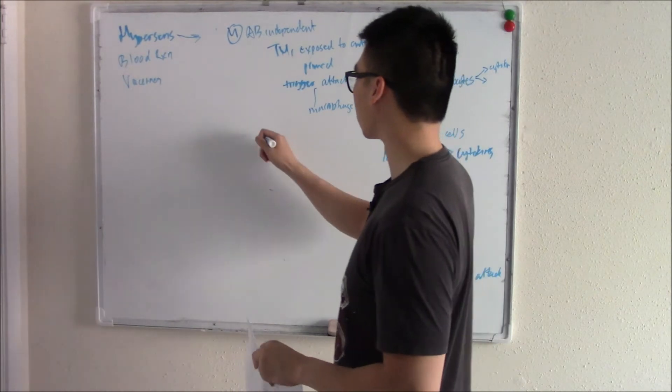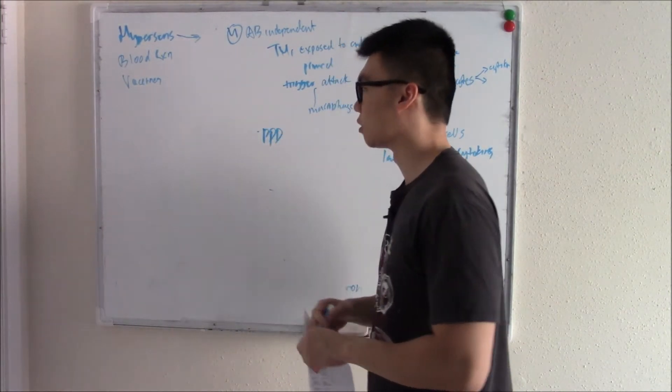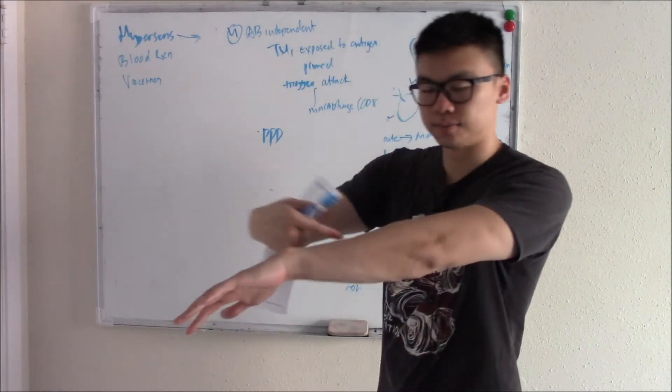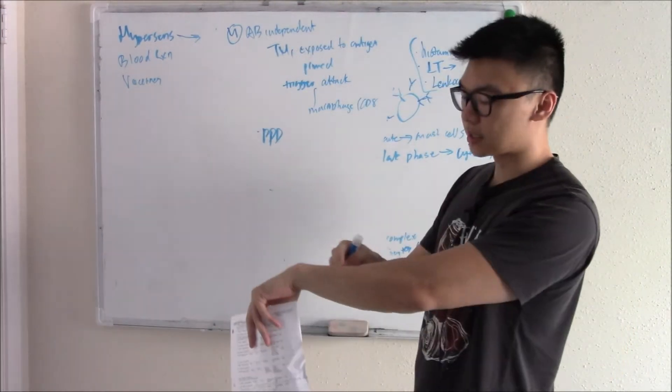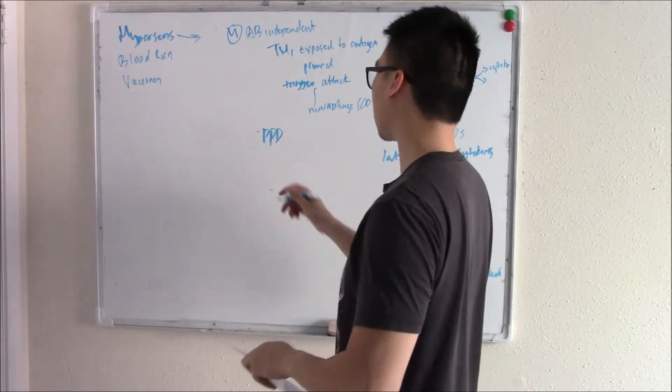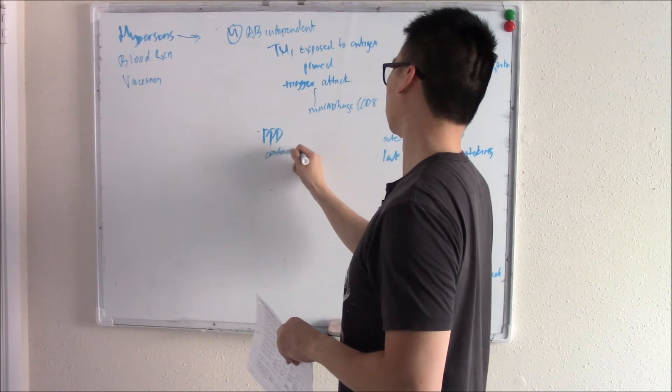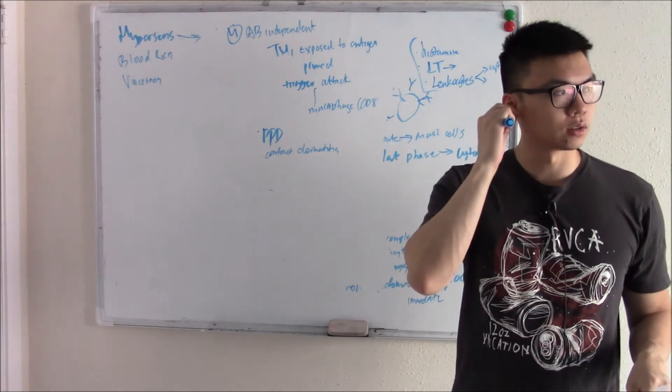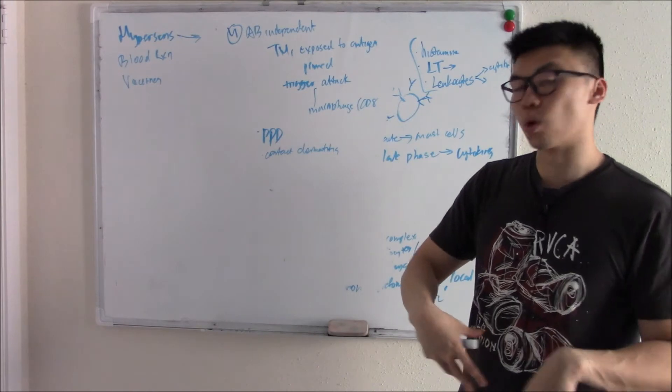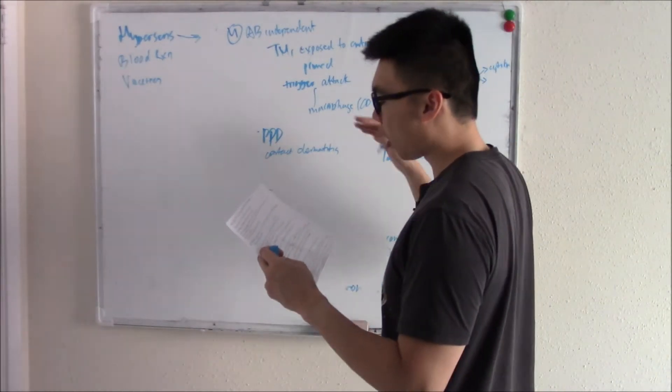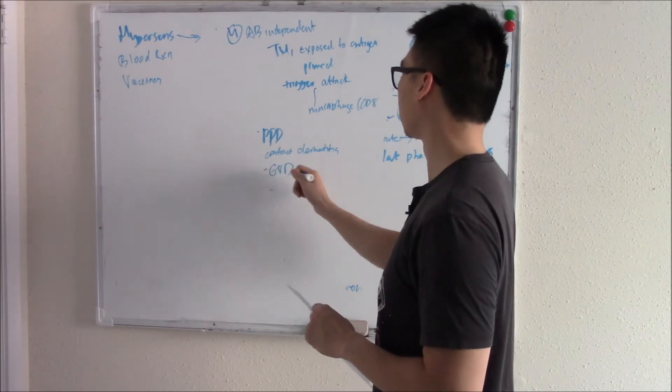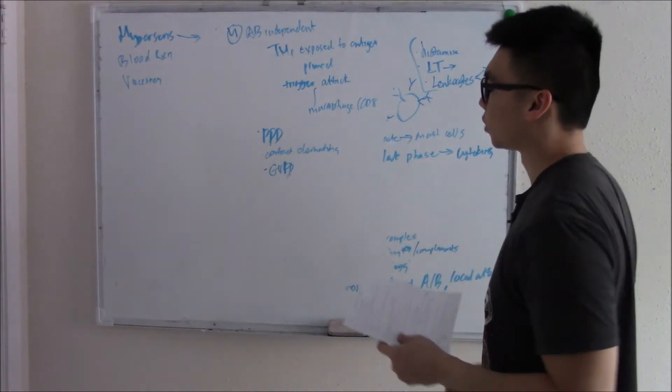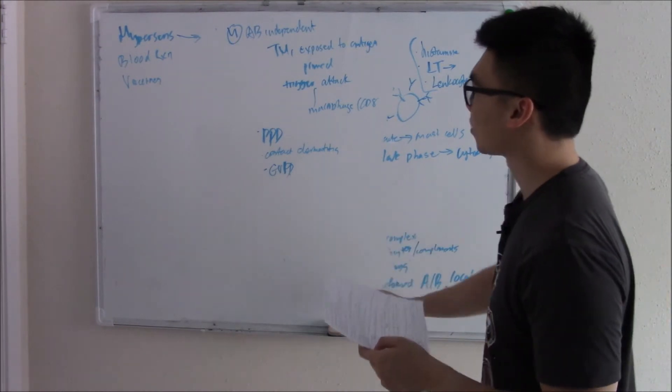Now there's some examples you should know. PPD test is one of them. If you're exposed to tuberculosis and your Th1 cells are primed, and then the next time you're exposed again via the PPD test, when they inject the antigen in your skin, you will attack it. So you get this little swelling, this redness, and that's your PPD test. Contact dermatitis is another one, like nickel. A lot of people have a reaction to nickel. Or poison ivy. There's one more, graft versus host disease. It's a type four hypersensitivity reaction.